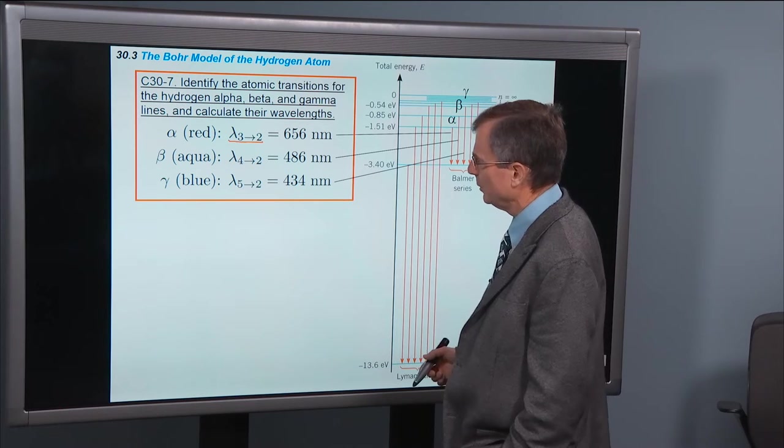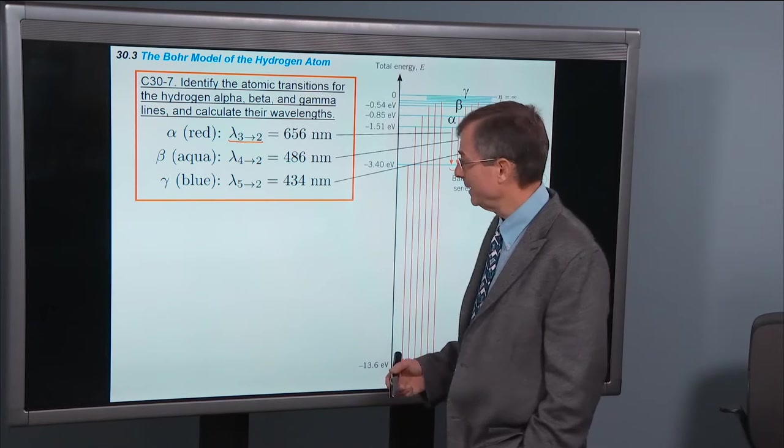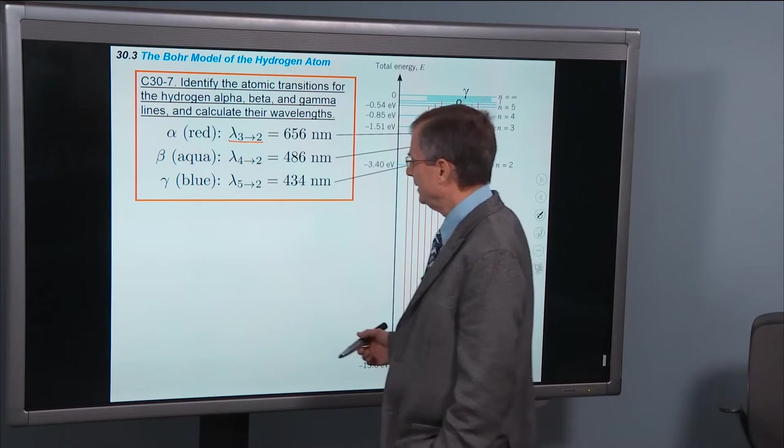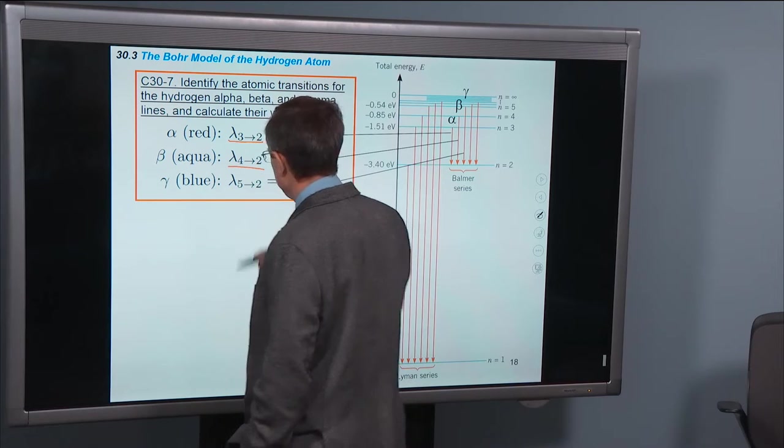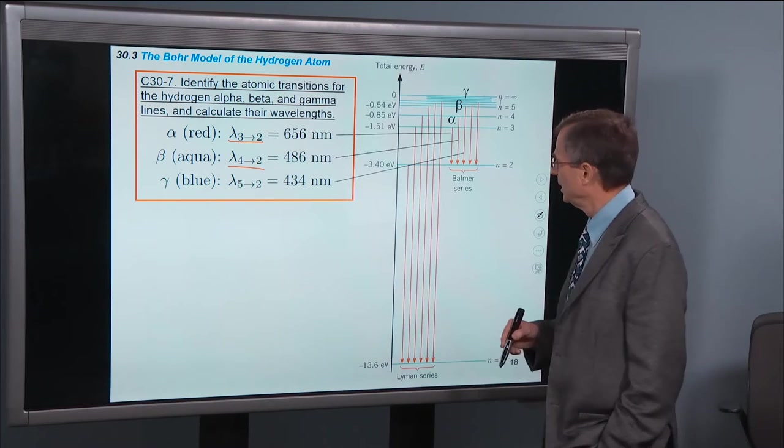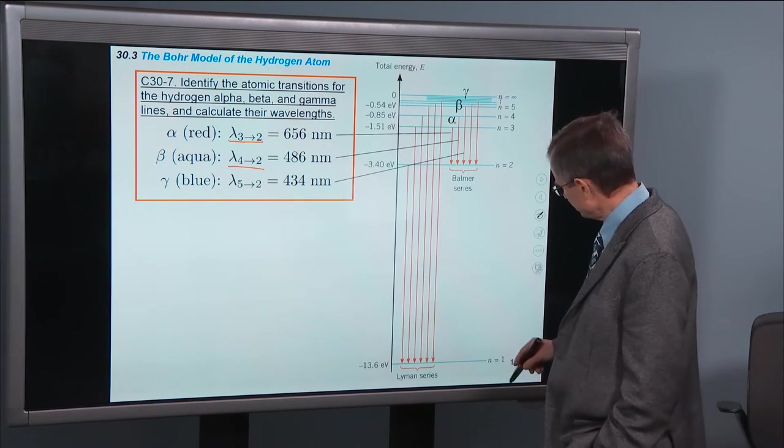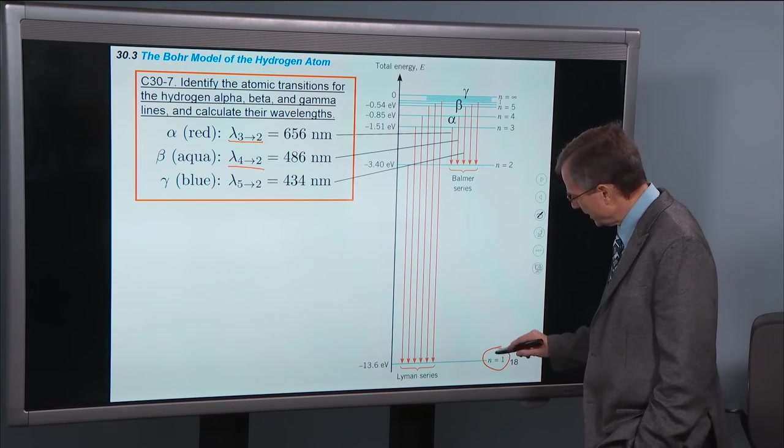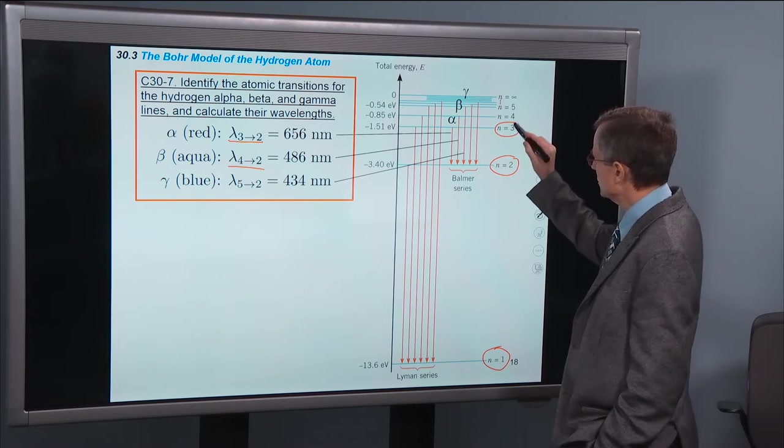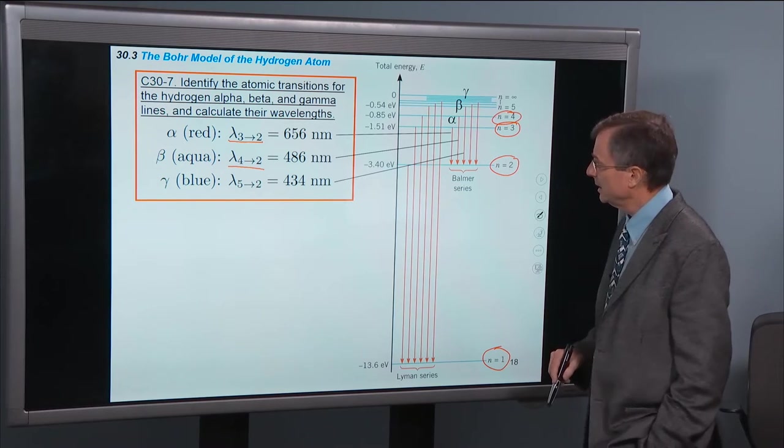And you say, well, what about the beta and the alpha, or beta and the gamma? And the answer is that the beta line is a transition from 4 to 2. So let's look at these. Here are the energy levels again. n equals 1, n equals 2, n equals 3, n equals 4, etc.